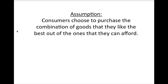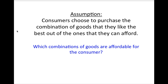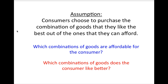Thus, in order to have a useful model, we must be able to describe two things. First, which combinations of goods are affordable for the consumer? And second, out of these combinations, which combinations does the consumer like better? We will start building our model with the simplest piece, which is the description of the combinations of goods that the consumer can afford. We call this description the budget constraint.